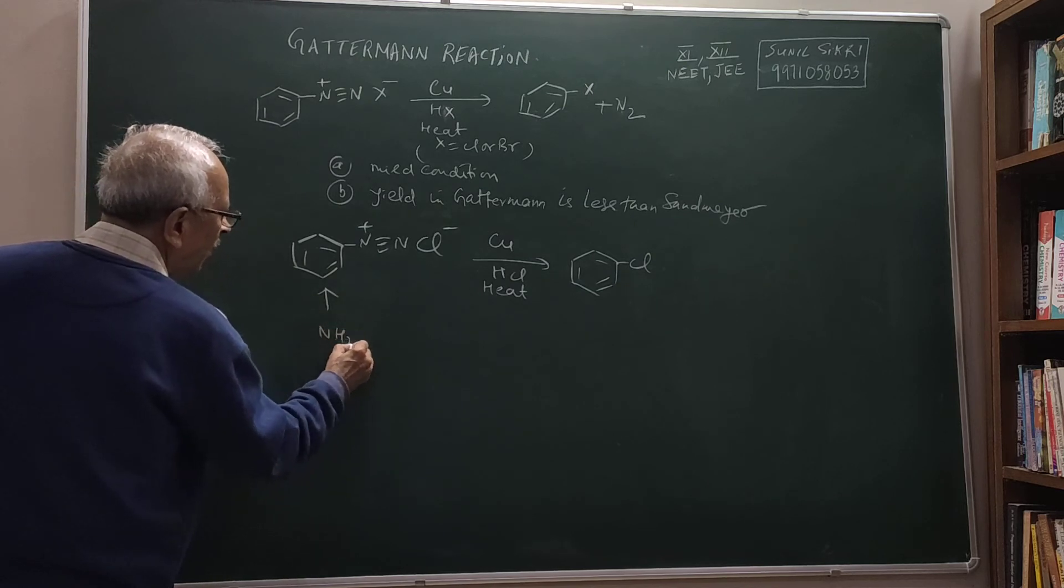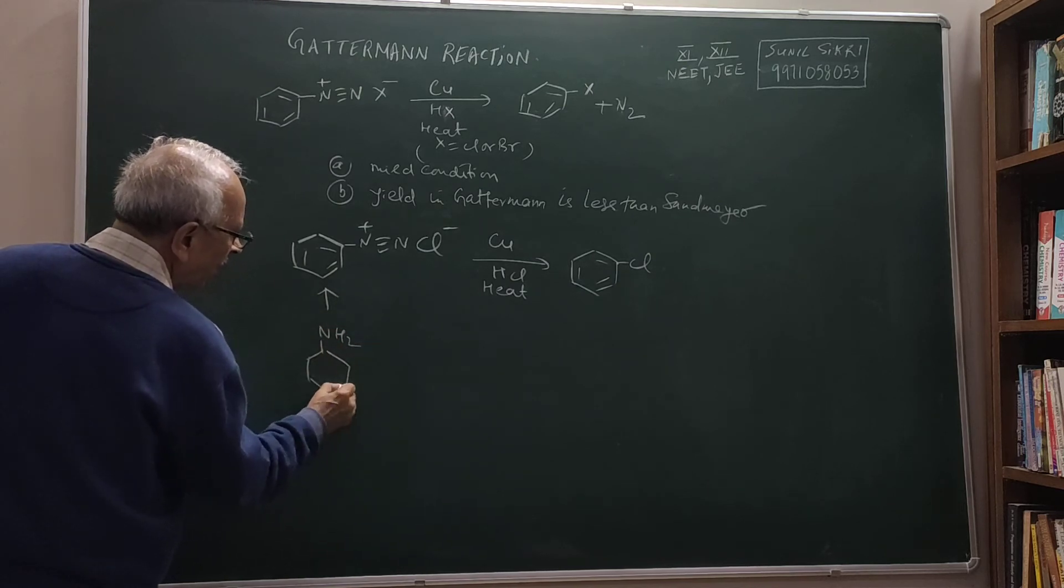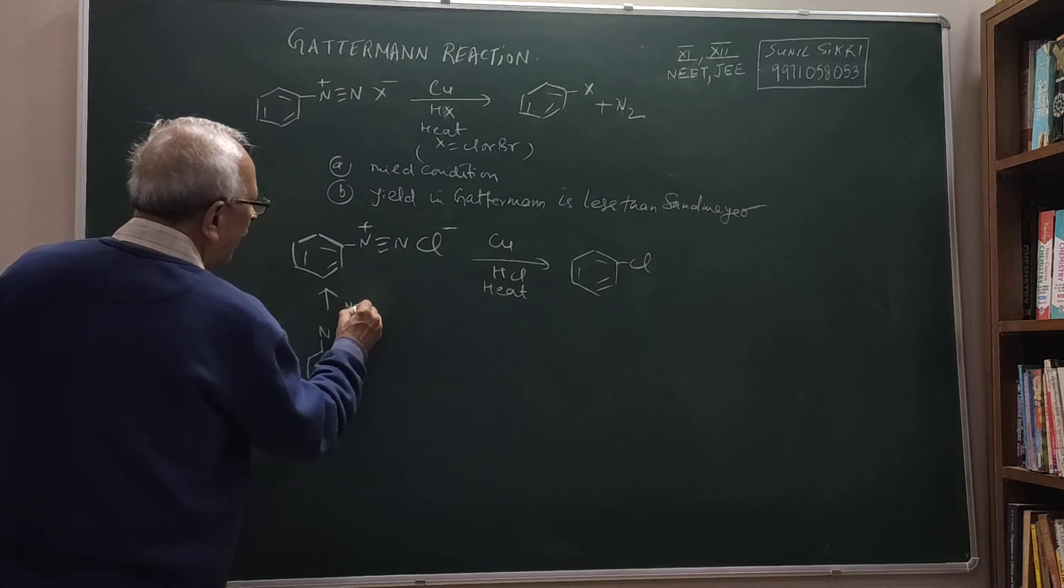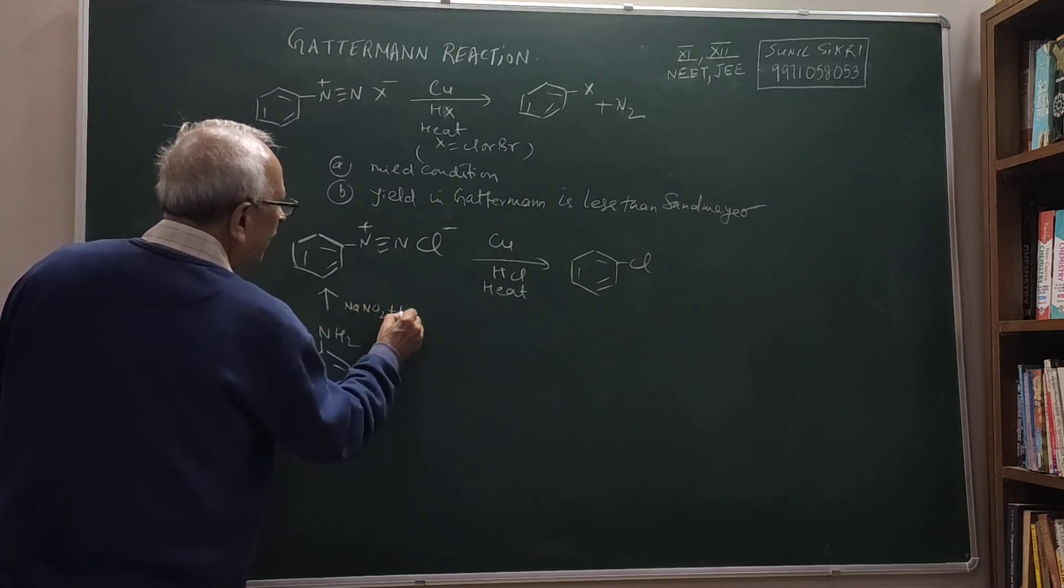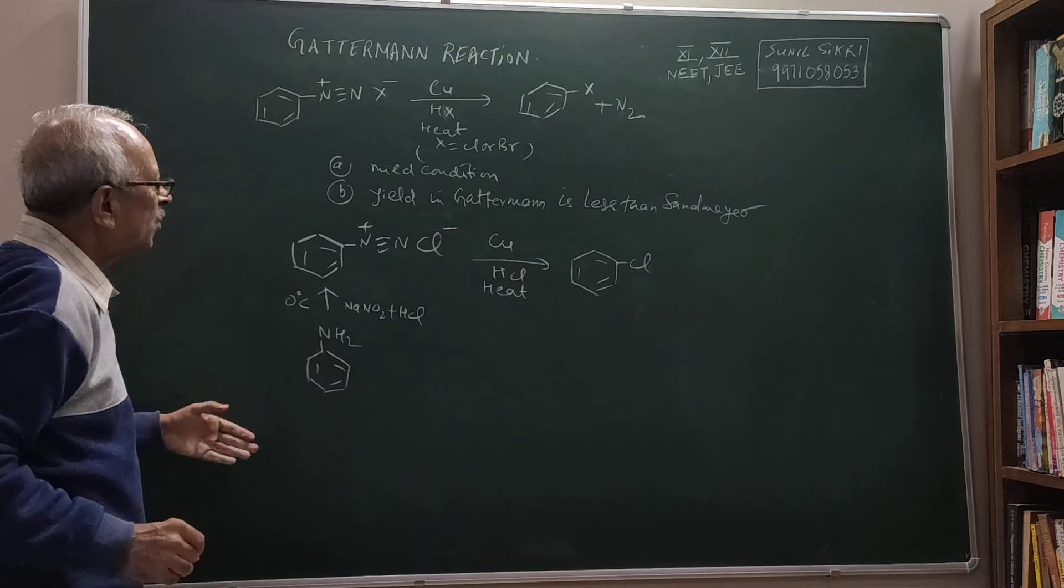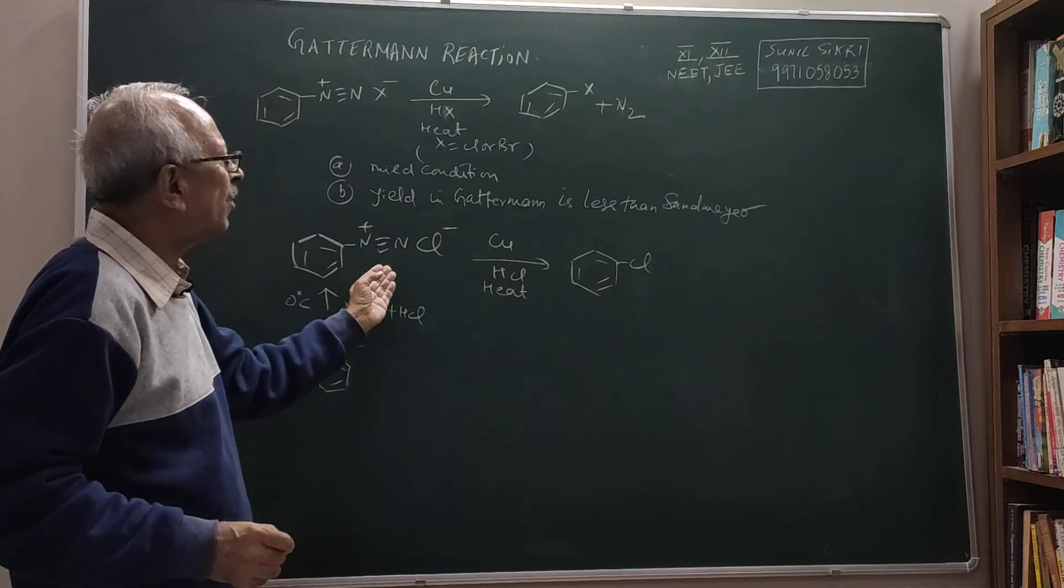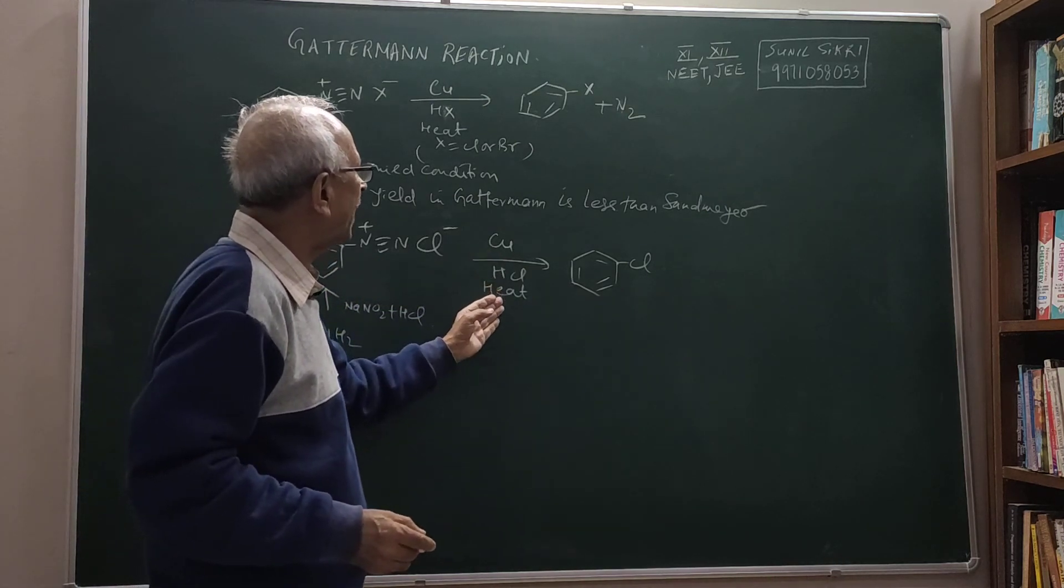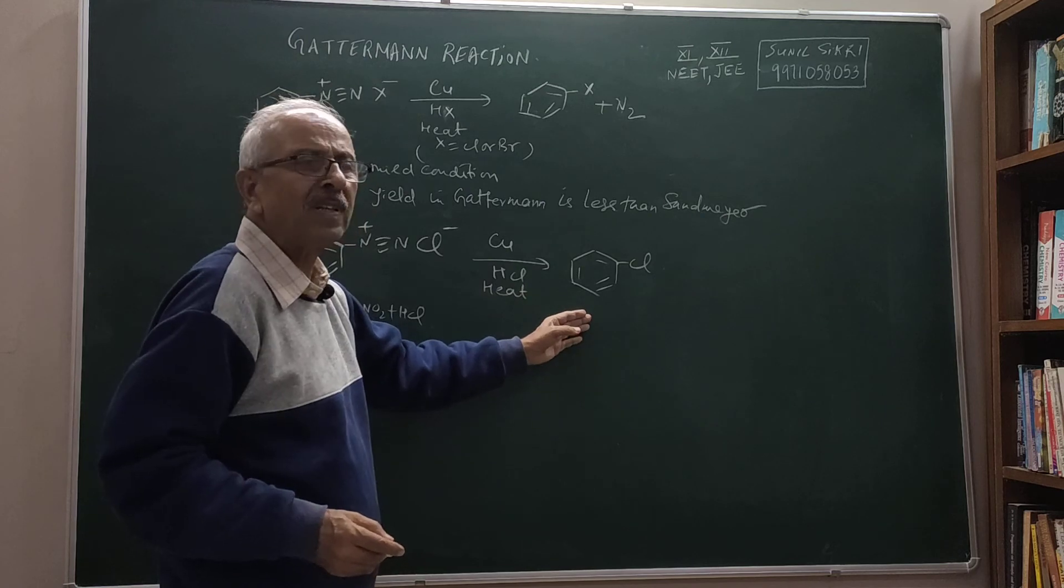I prepare this from aniline by reacting with NaNO2 plus HCl at 0 degrees Celsius. So as soon as I prepare benzene diazonium chloride, I will react with copper and HCl, heat, and I will get chlorobenzene.